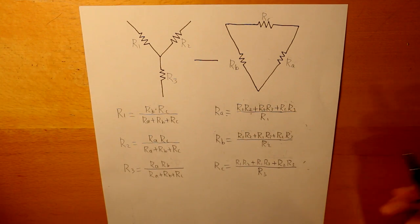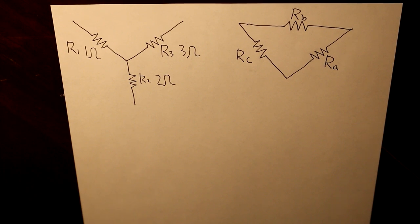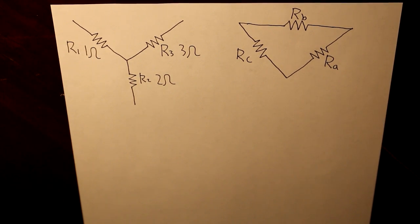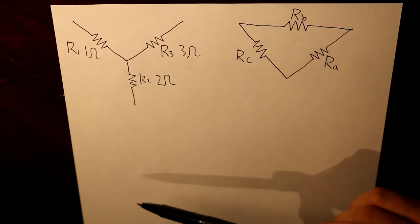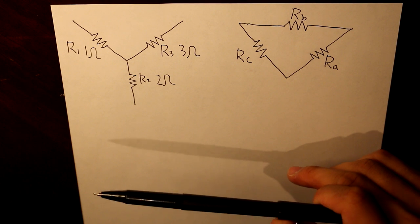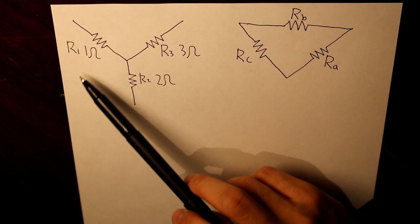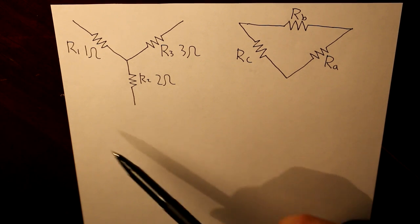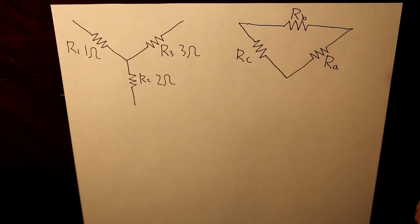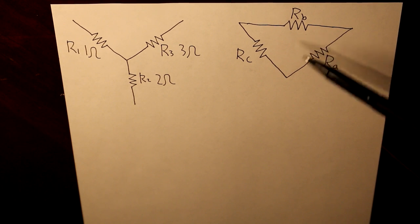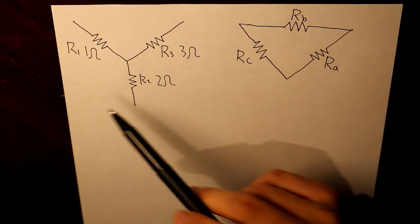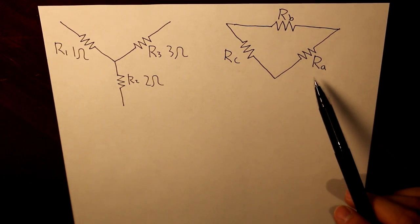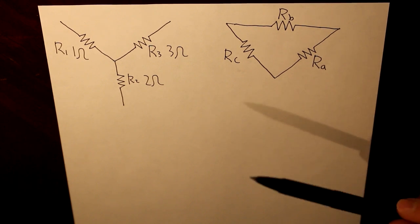Moving on, here we are given an example where we have to determine what our delta configuration values are. We are already given the initial values for the Y configuration parameters: R1 is 1 ohm, R2 is 2 ohms, and R3 is 3 ohms. We have to determine what RA, RB, and RC are. To clarify the equivalence: R1 is equivalent to RA, R2 is equivalent to RB, and R3 is equivalent to RC.